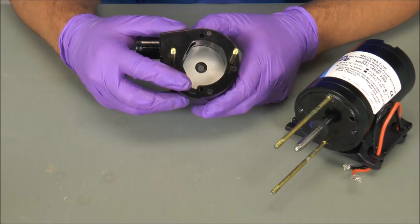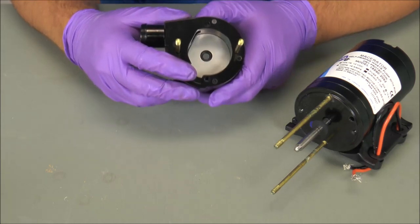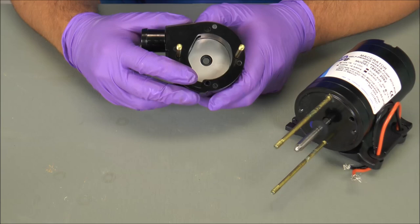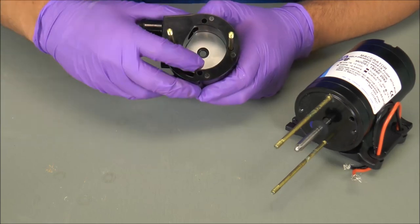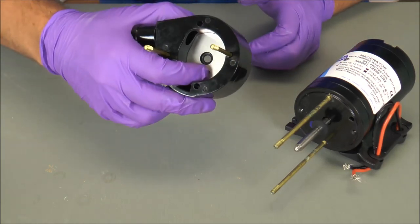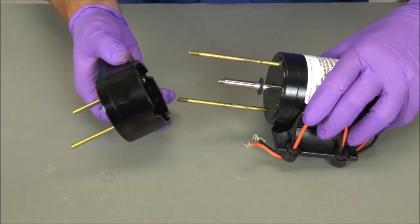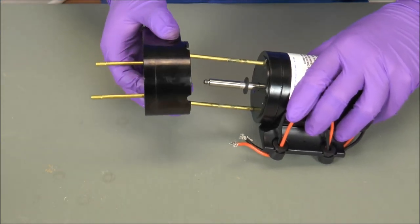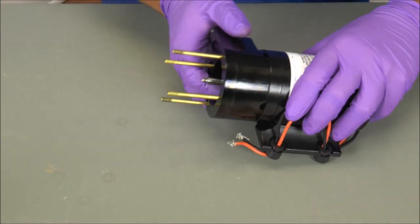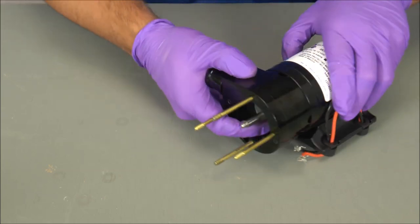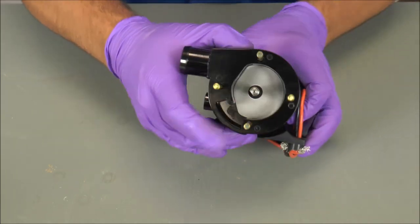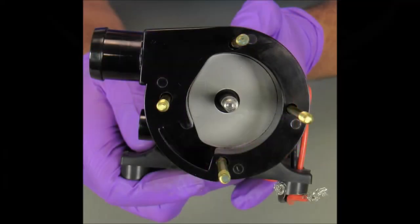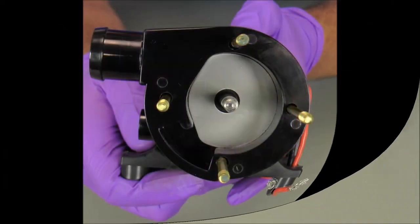So before we install the impeller, we're going to slide the impeller housing back onto the shaft of the macerator. Now keep in mind, take your finger, hold it over the small wear plate, and go ahead and reinstall the impeller body all the way back.